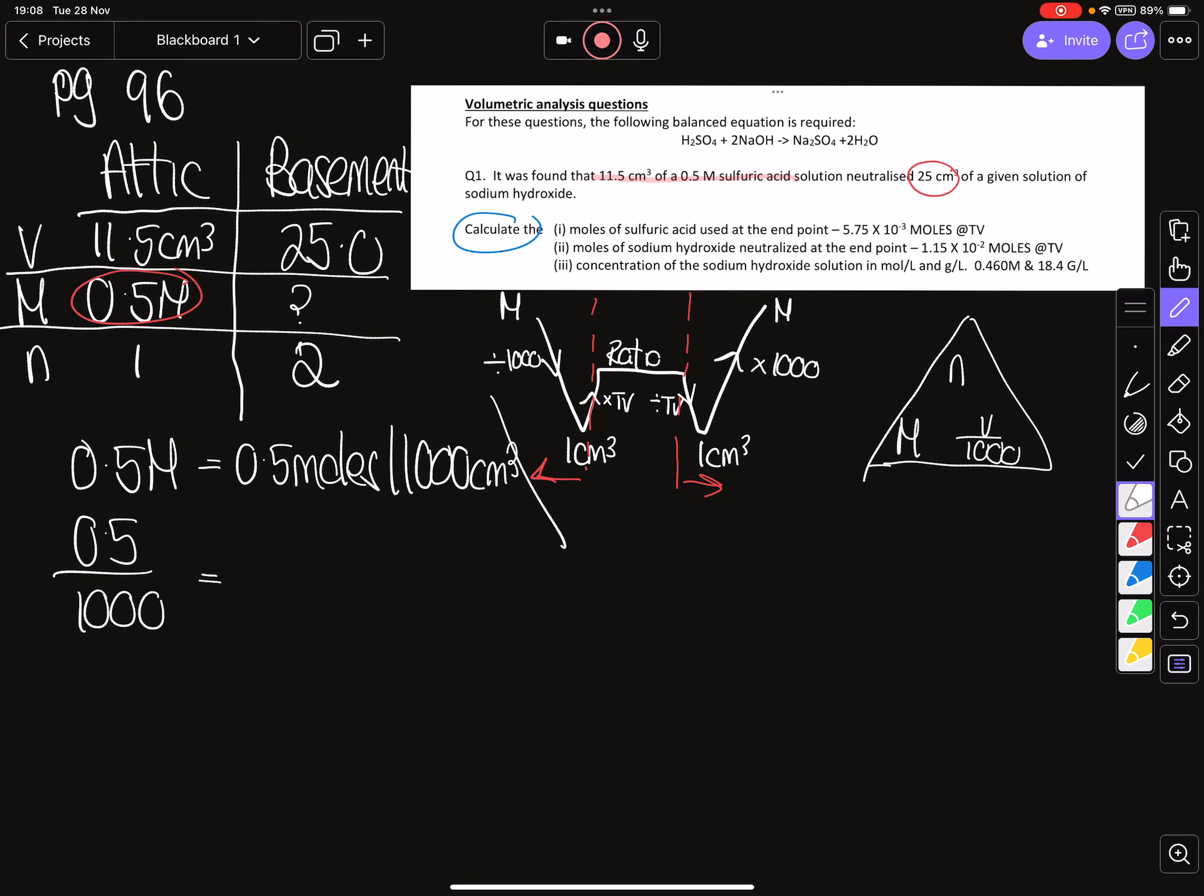The first thing we're going to do is we are coming from the top left of our W down to the very bottom. We're going to divide 0.5 by a thousand and when we do that we should get 5 by 10 to the minus 4 moles, and that is now in a centimeter cubed. We then have to multiply it by our titration volume which in this case was 11.5 centimeters cubed.